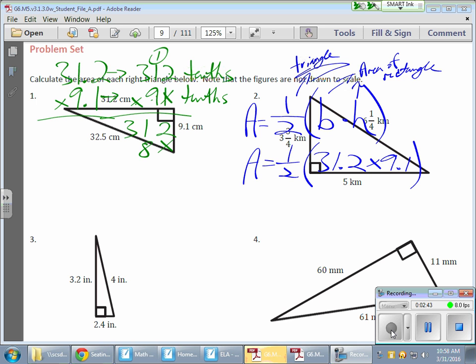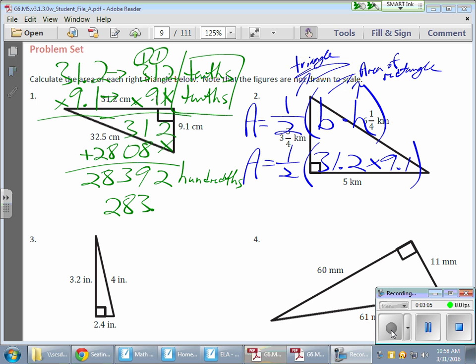And then my 9 times 2 gives me my 18. 9 times 1 equals 9, plus 1 gives me 10, 9 times 3, 27, plus 1, 28, add that down, there's a 2, a 9, a 3, an 8, and another 2. I have tenths times tenths, which gives me hundredths. And so if I have 28,392 hundredths, that's the same as saying I have 283.92, or 283 and 92 hundredths.